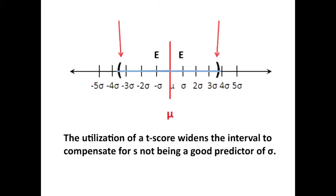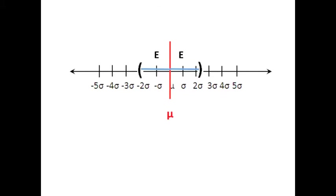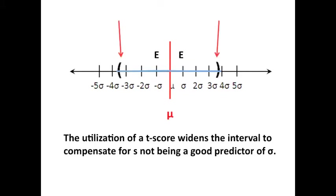When we use a t score, the t score widens the interval. Look here. Here's the z score interval. Here's the t score interval. The t score widens the interval to compensate for s not being a good predictor of sigma. Now that we've gone through that, I want to show you how to read a t score table. So hang on for the following exciting discussion of this tremendous topic.